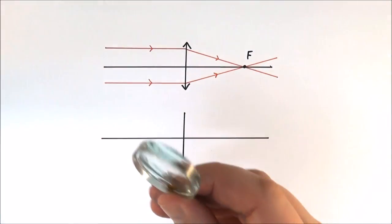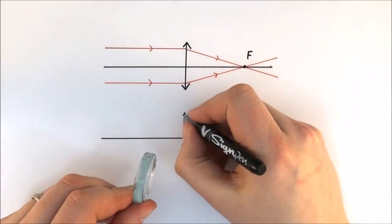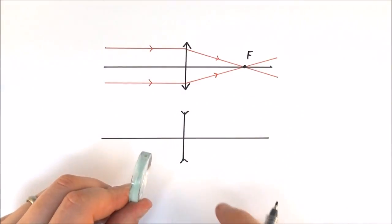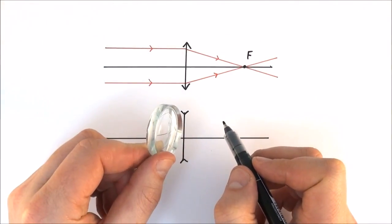Now this is very different to what happens with a diverging lens. To represent it as diverging, I'm going to put these arrowheads a bit like this to show that it's thinner in the middle and fatter at the ends.